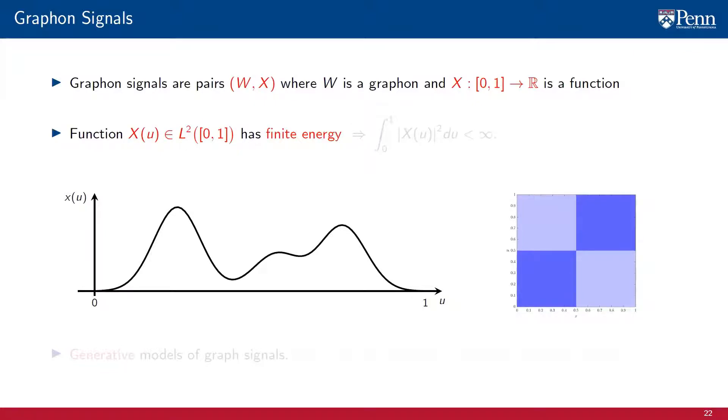The function X in the graphon signal is required to have finite energy. This is equivalent to saying that X belongs to the space of L2 functions supported in the unit interval. In case you are not familiar with the meaning of finite energy for continuous signals, it just means that the integral of the square of X is bounded. The figure on this slide shows an example of a graphon signal involving a function supported in the unit interval and a graphon.